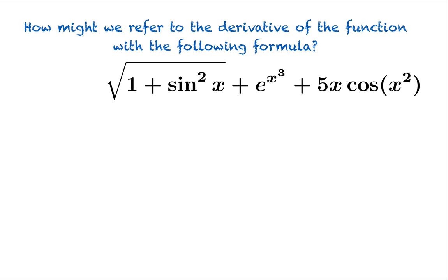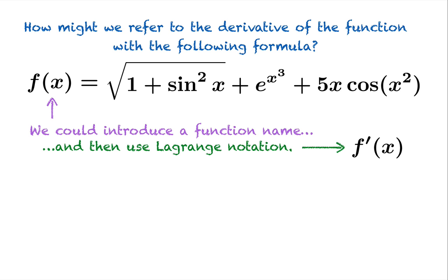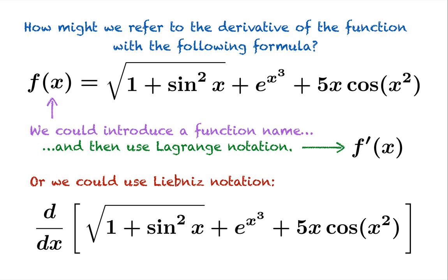How might we use this variation of the Leibniz notation? Suppose you had this fearsome looking formula for a function and you want to refer to the derivative. One possibility is you give the function a name and then you refer to f prime of x. We call it f of x and now we can refer to f prime of x. Another possibility is you use this Leibniz notation just to say, bang, there's the derivative. I want the derivative of that awful looking function.